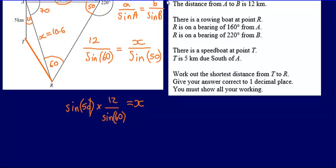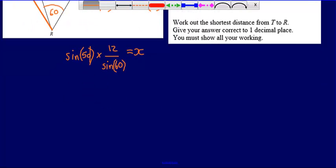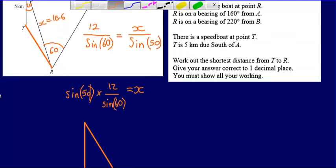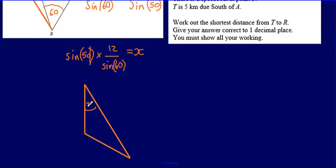Now I'll draw out triangle ATR larger so we can see it clearly. The angle at the top is 20 degrees. The length AT is 5 and the length AR is 10.6, and I'm trying to find the length TR. I have two lengths of 5 and 10.6 trapping the angle of 20 degrees — when I see this situation I should immediately recognise I can use the cosine rule.